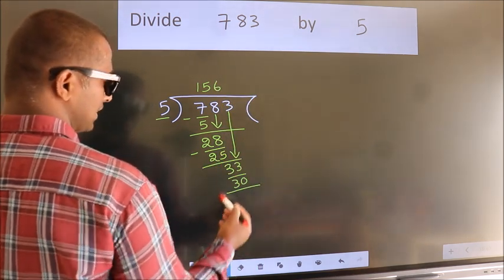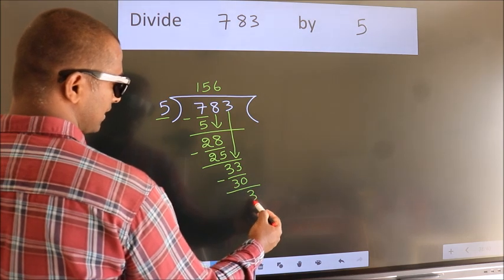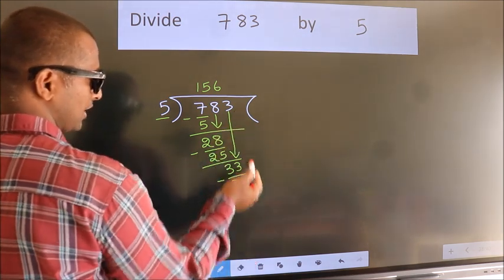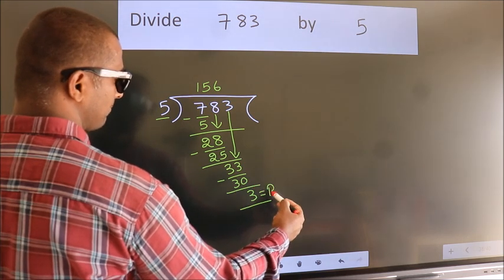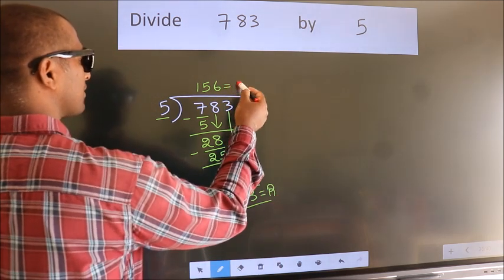Now we subtract. We get 3. No more numbers to bring it down. So we stop here. This is our remainder. This is our quotient.